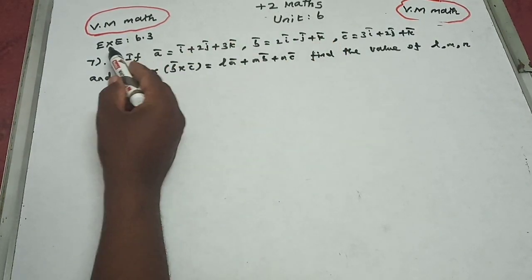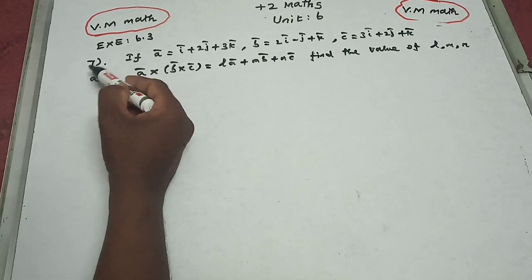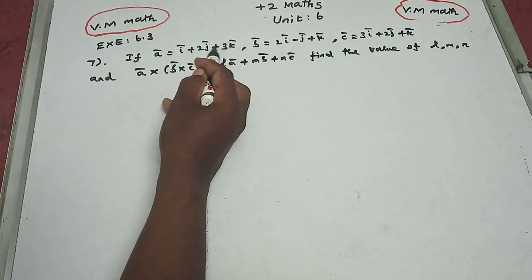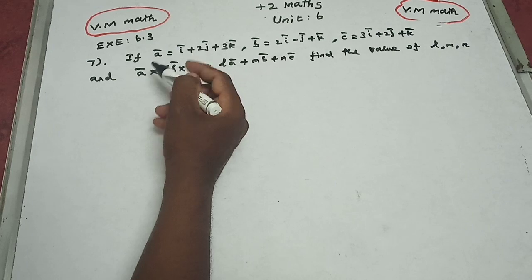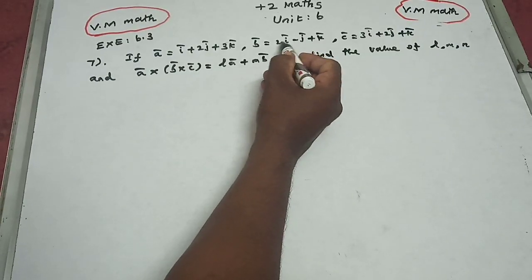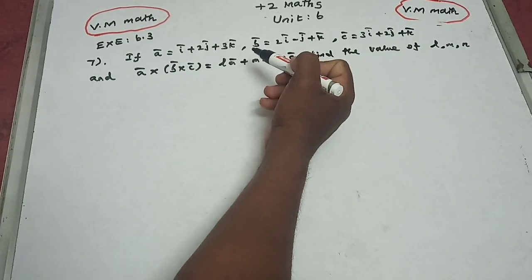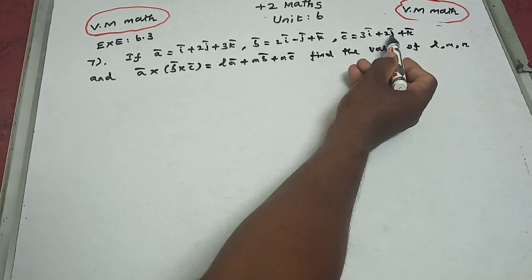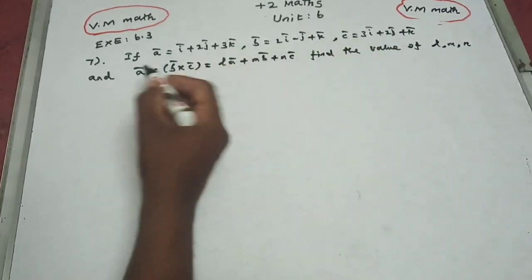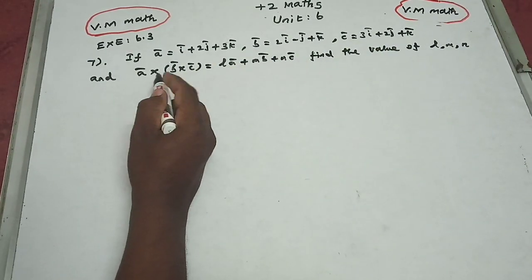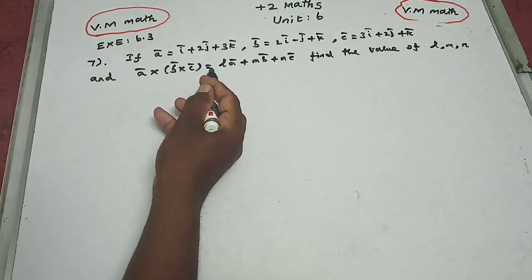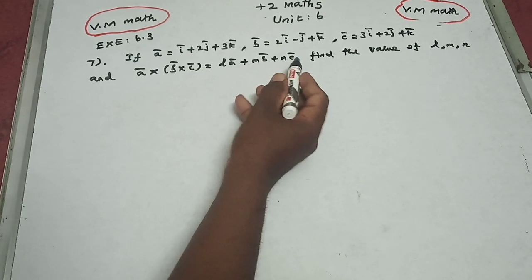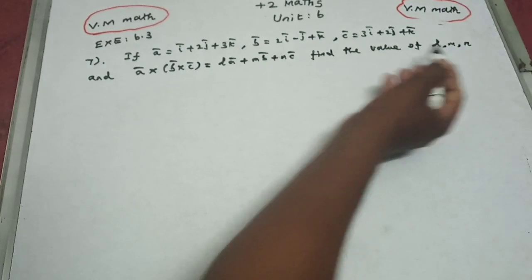Plus 2, max unit 6, exercise 6.3, 7th question. If vector a equals i + 2j + 3k, vector b equals 2i - j + k, vector c equals 3i + 2j + k, and a × (b × c) equals la + mb + nc, find the value of lmn.